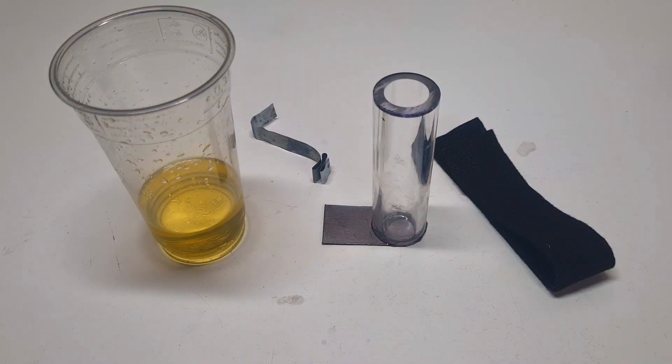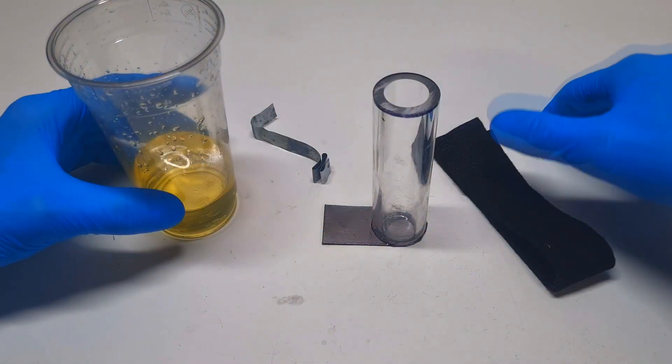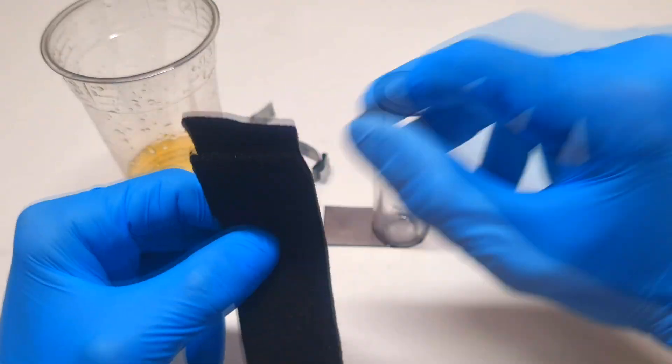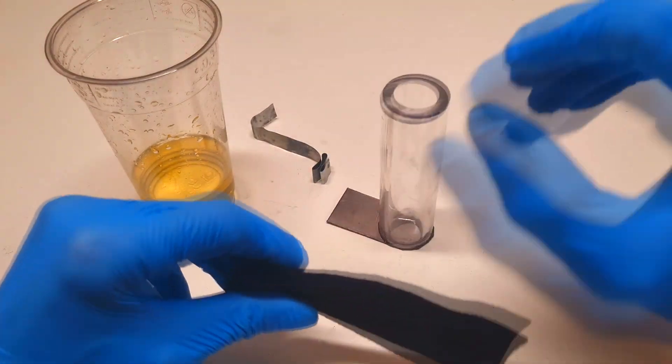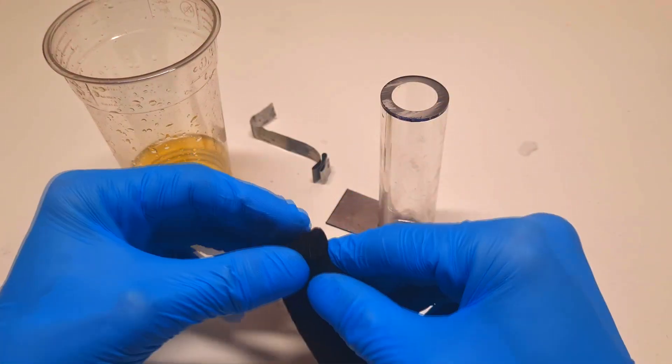And now I will put together this cell. So first of all, I will put this activated carbon felt into the tube.